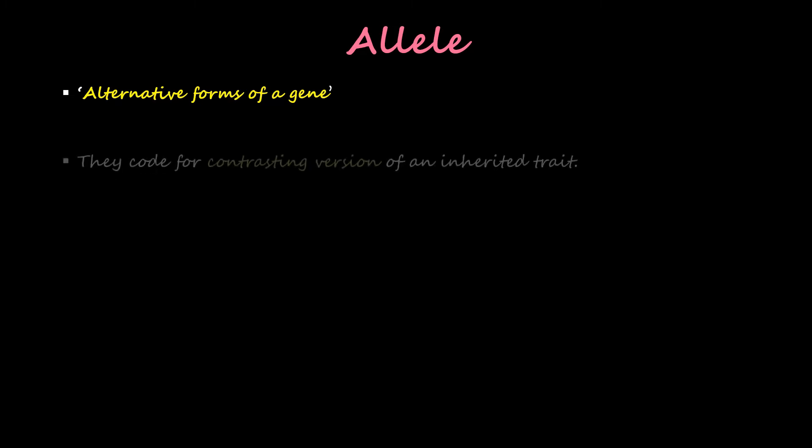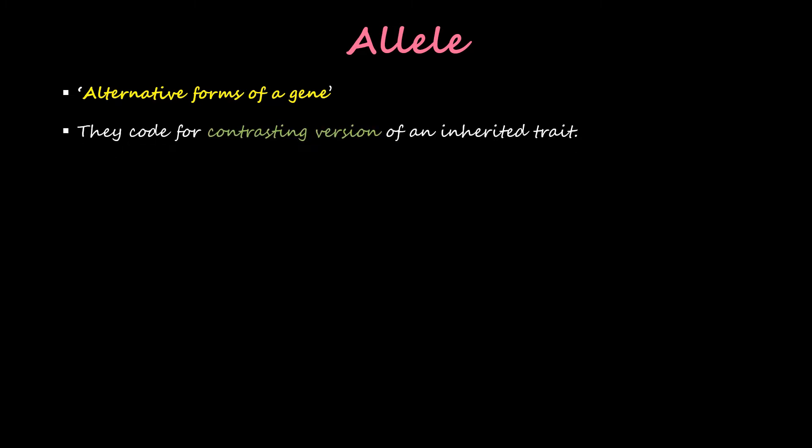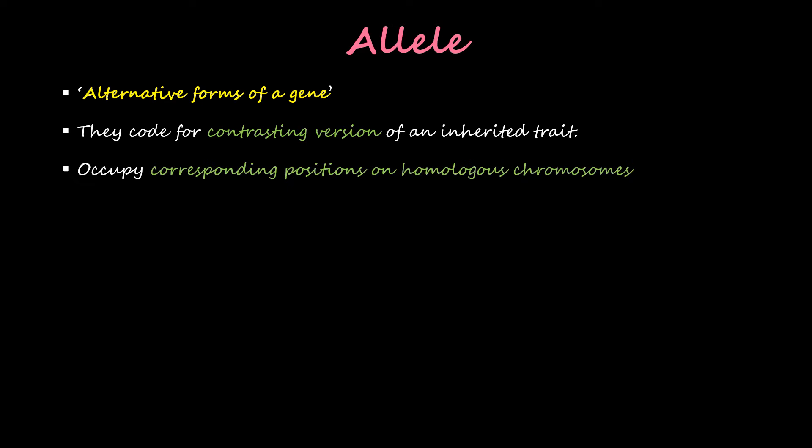Whenever we talk about genes we cannot escape mentioning alleles. Alleles are alternative forms of a gene — they code for a contrasting version of an inherited trait. For example, if the trait is height, then a person can be tall or short, which is determined by the allele present in that organism.